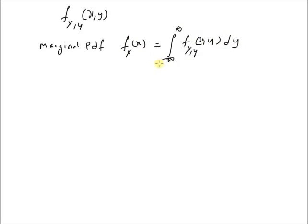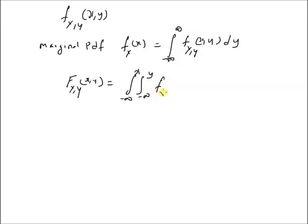In this short video, we will look at a proof of this theorem. We know that by definition the joint CDF — that is, the joint cumulative distribution function F_{x,y}(x, y) — is equal to the double integral with the first limit from minus infinity to x and second limit from minus infinity to y over the joint PDF f_{x,y}(u, v) du dv. This is the definition of joint CDF of the two random variables x and y.